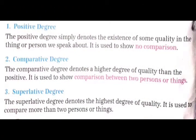First is positive degree. The positive degree simply denotes the existence of some quality in the thing or person we speak about. Positive degree simply thing या person के बीच कुछ ऐसे गुणों के बारे में बताता है जो अभी भी है. It is used to show no comparison. इसका use comparison को show करने के लिए नहीं किया जाता है.